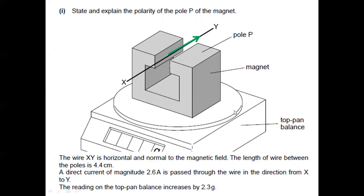Now, once this happens, the reading on the balance increases by 2.3 grams. What does that mean? That means as soon as the current is present in the wire, the magnet was pushed down.